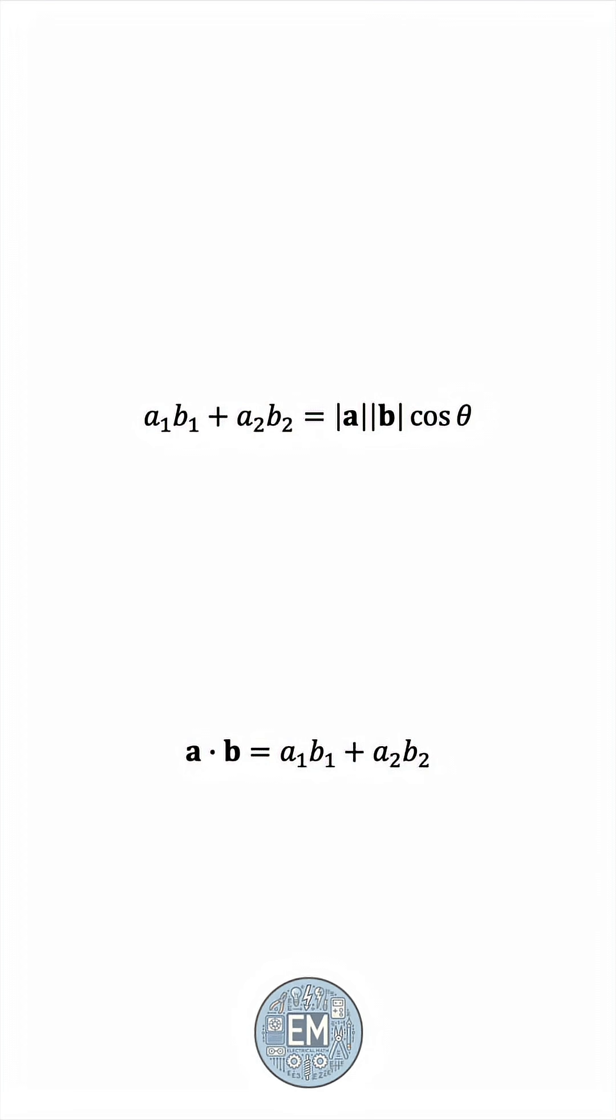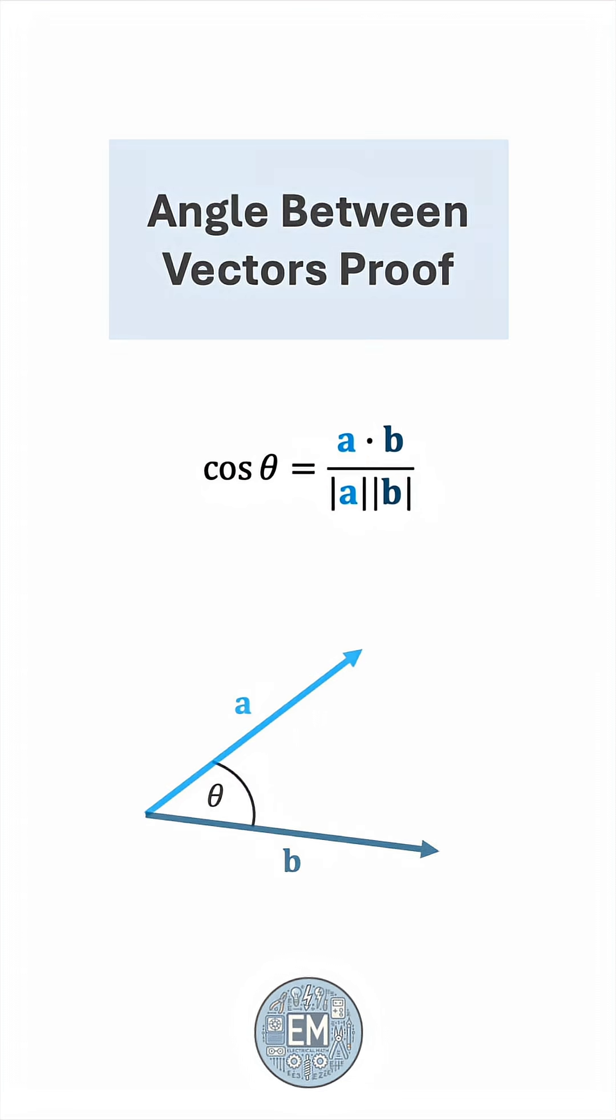Let's plug that in. With this, we can solve for cosine theta by dividing both sides by the length of a times the length of b. And so, there you have it.